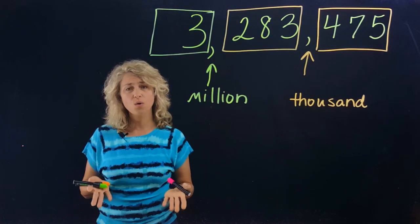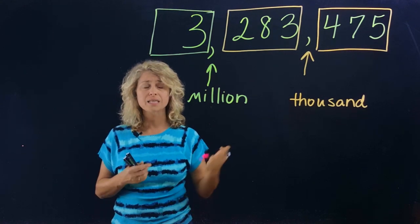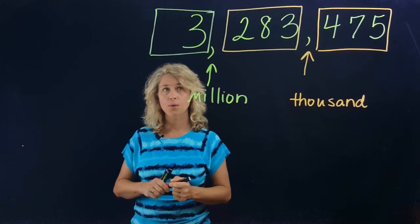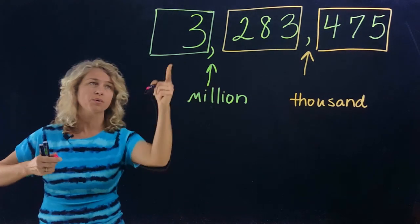All right, so now we're going to write the number in standard form in word form. Let's start with the first number: three.